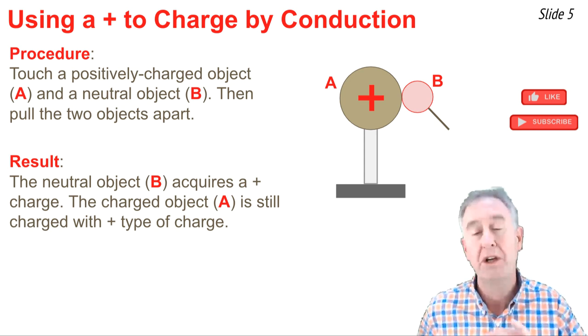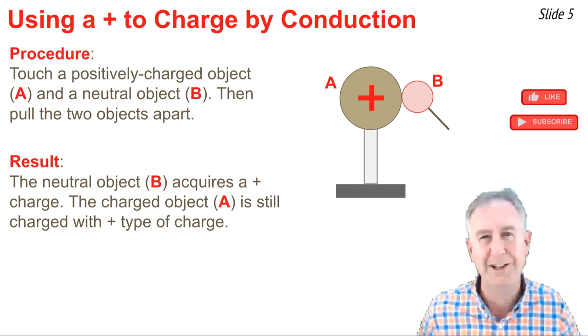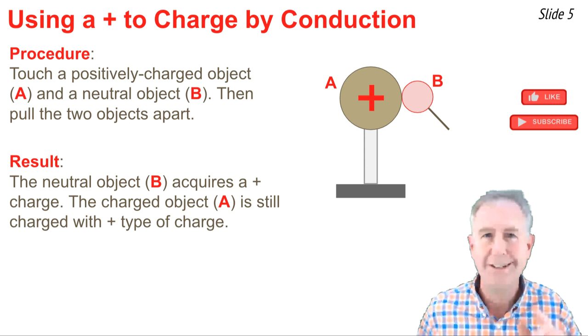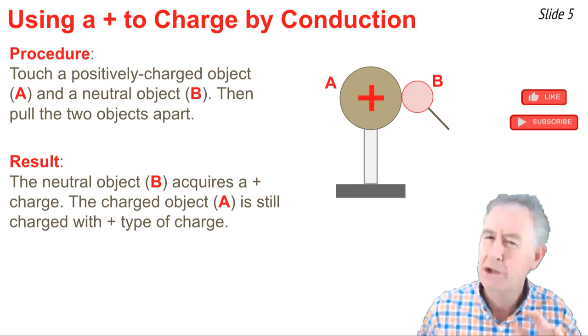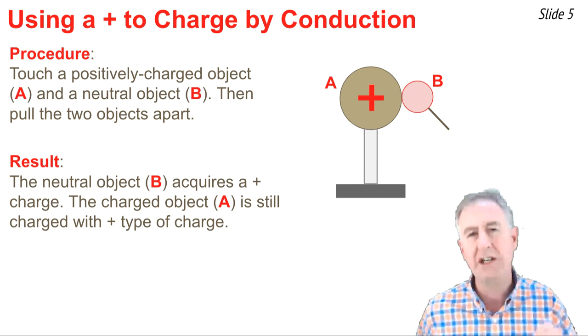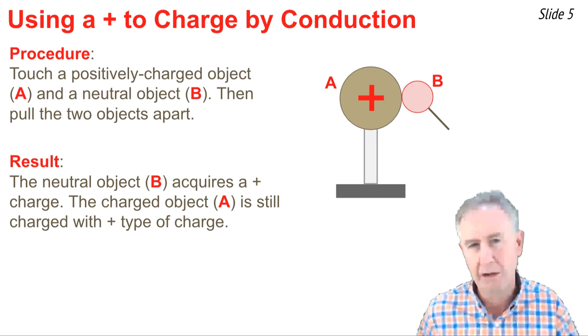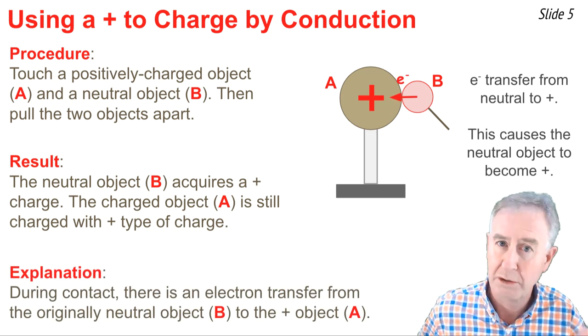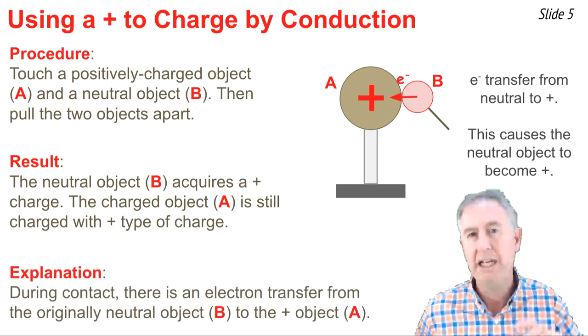Now, some of the electrons in object B, when touched to object A, notice a positive charge, and electrons love positive. And so some, not all, of the electrons in object B migrate onto A, being attracted by the positive charge, and there's a transfer of electrons from B to A.